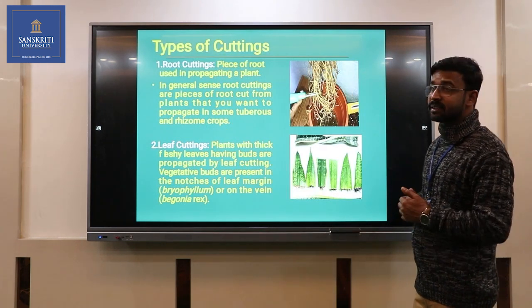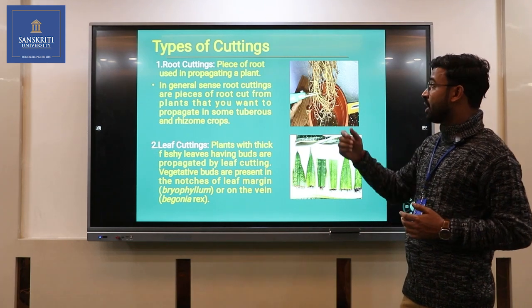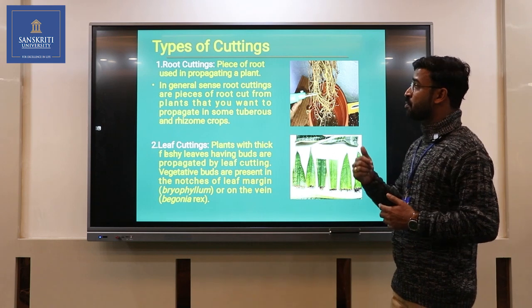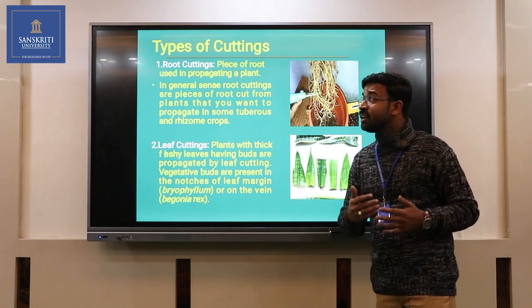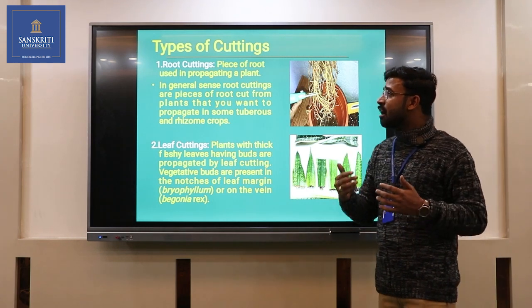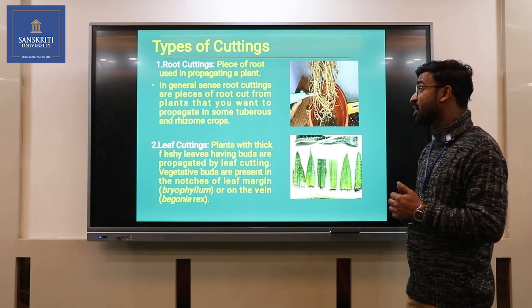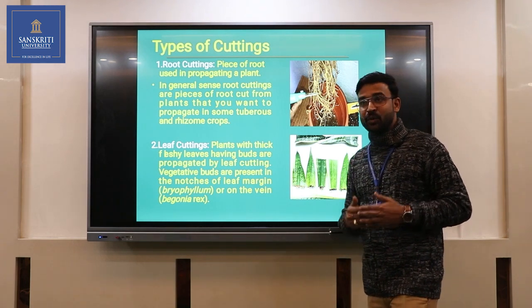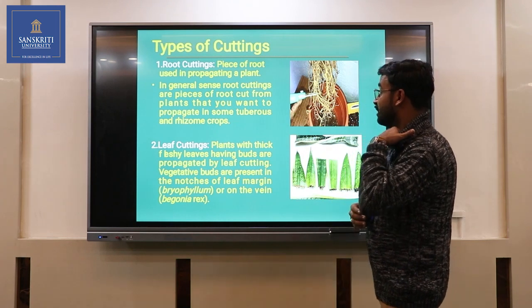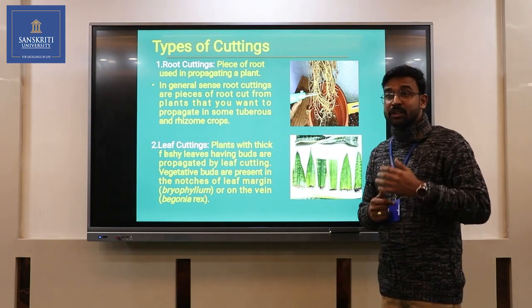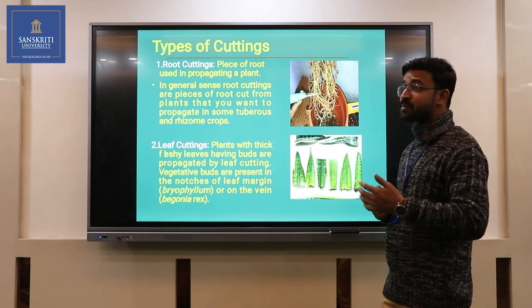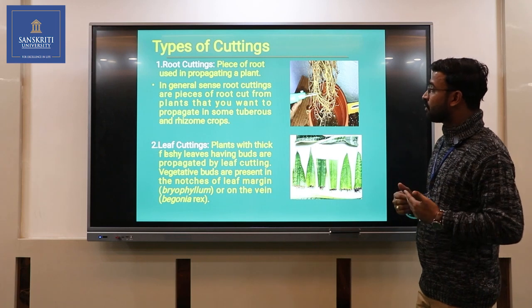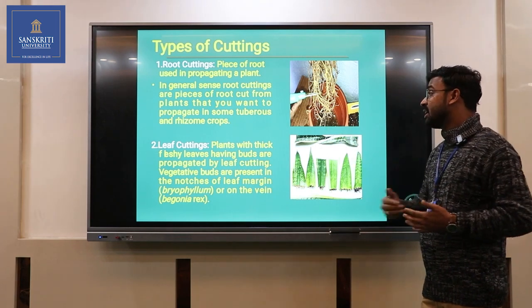The types of cuttings: the first one is root cuttings, where we use the root part for propagation. Root cuttings are pieces of root cut from the plant that you want to propagate, used in some tuberous and rhizome crops. We multiply most tuberous and rhizome crops using root cuttings.